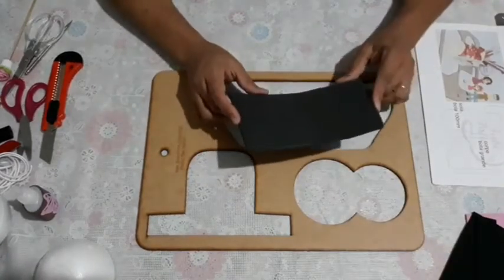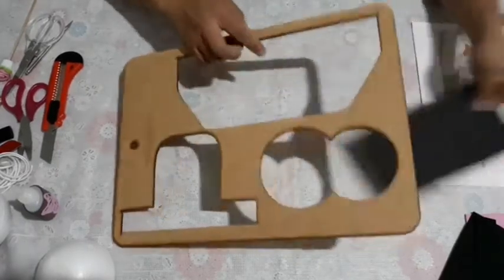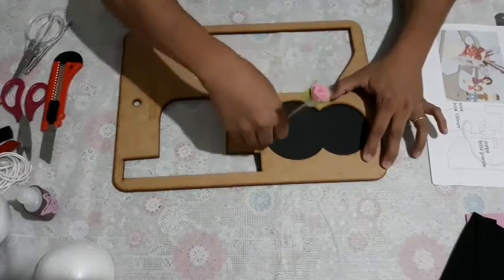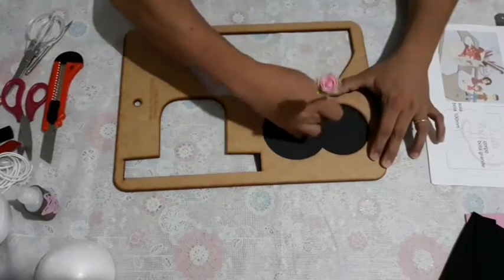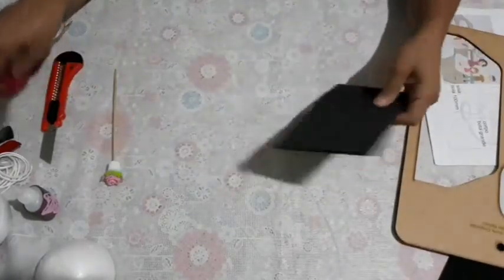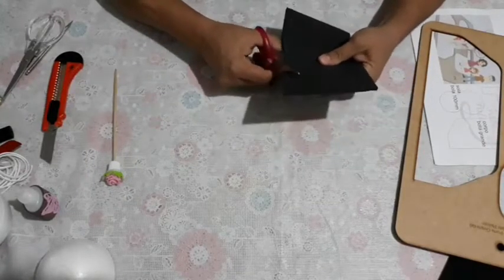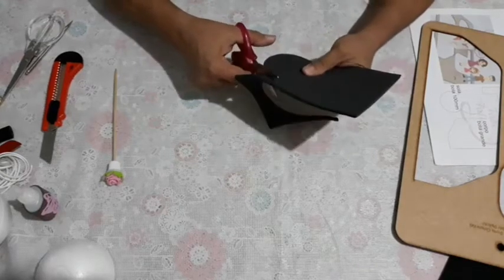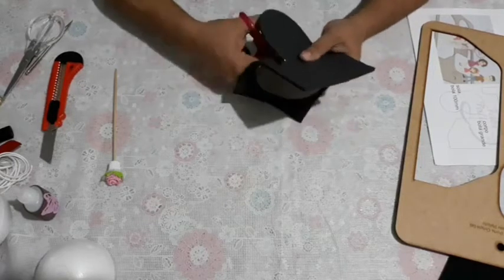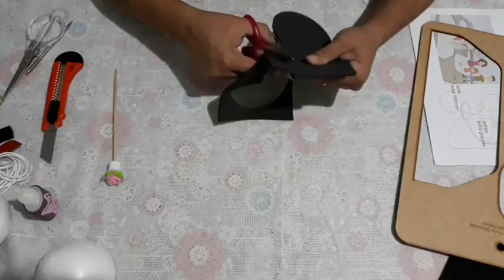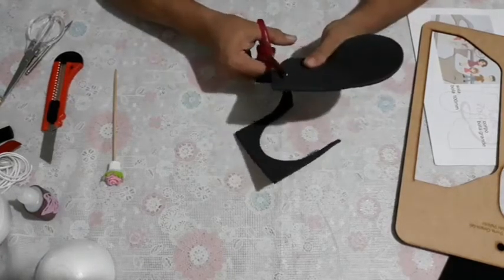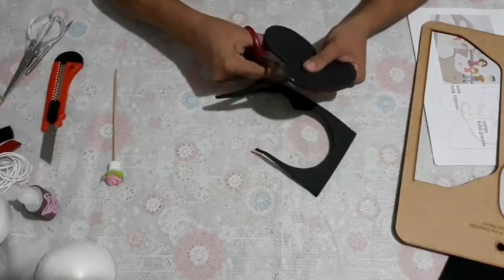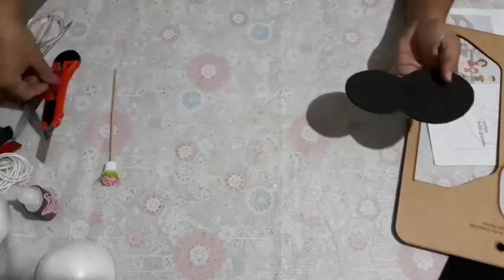Vou usar aqui um EVA de 5 milímetros para dar uma base mais firme para a botinha. É só posicionar o gabarito em cima do EVA, com um palitinho de churrasco, nós vamos riscar aqui por dentro. Fazendo isso, nós vamos recortar o EVA. Essa parte aqui é a sola da bota. Só virando o EVA, deixa a tesoura paradinha. Recortamos, ela vai ficar assim.